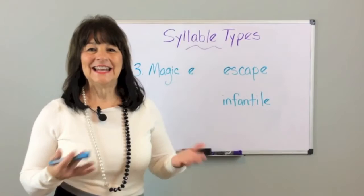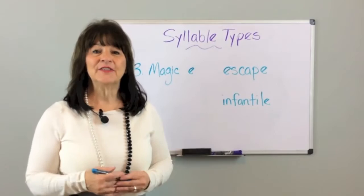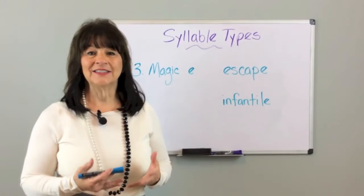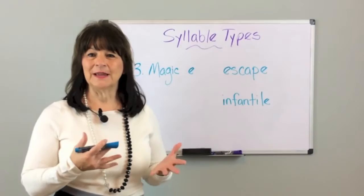Now let's look at the next syllable type. It's called Magic E — simply a vowel, consonant, and E. Some of you use the terminology A-E, O-E, I-E, etc. When your students learn this long vowel rule, it can be taught as a syllable type called Magic E. When decoding, we use the designation ME to label the syllable type.